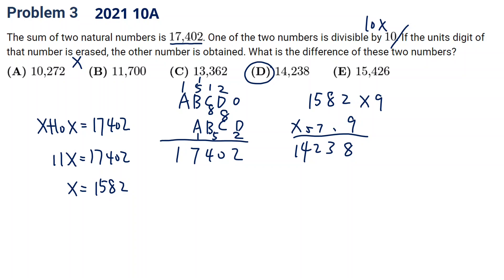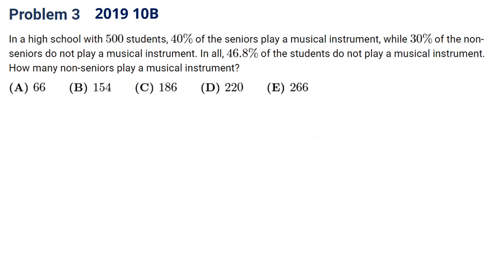Okay, let's see the next one. This is from 2019 10B, problem 3. Let's pause the video and think about it. Okay, let's take a look. So we have 500 students. 40% of the seniors play a musical instrument. 30% of non-seniors do not play. In all, a certain number of students play a musical instrument.